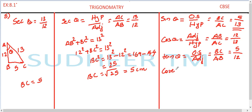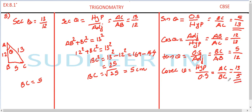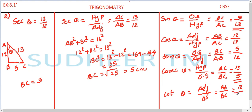Next, cosec theta: it is the reciprocal of sin theta, so hypotenuse divided by opposite side — AC divided by BC — which is 13 divided by 5. Sec theta is already given as 13 divided by 12. Finally, cot theta: adjacent side divided by opposite side, the reciprocal of tan theta, which is AB divided by BC — 12 divided by 5. So we have the whole solution here.